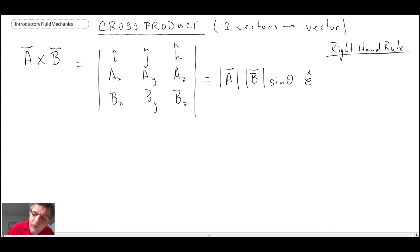Before we get to the right-hand rule, let me draw a little picture of these two vectors. So, let's say we have vector a here, vector b over here, and I'm going to draw this angle theta between those two vectors.